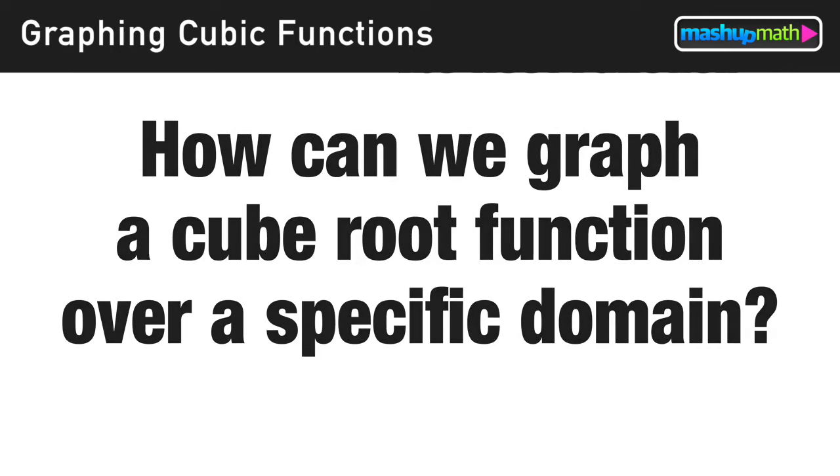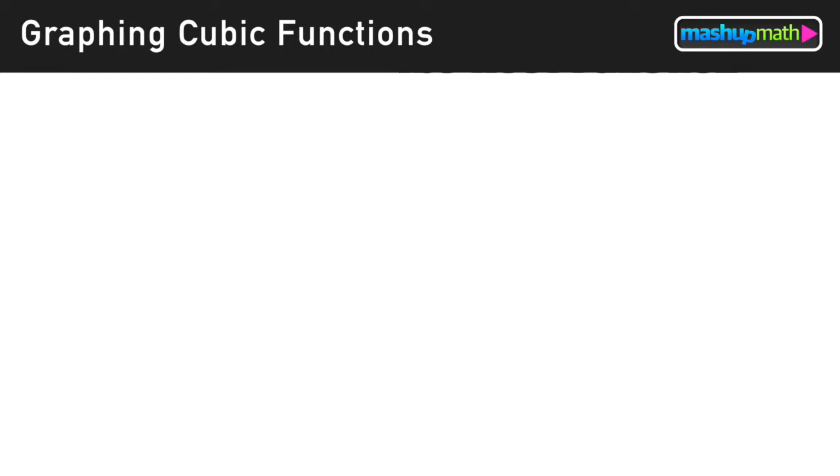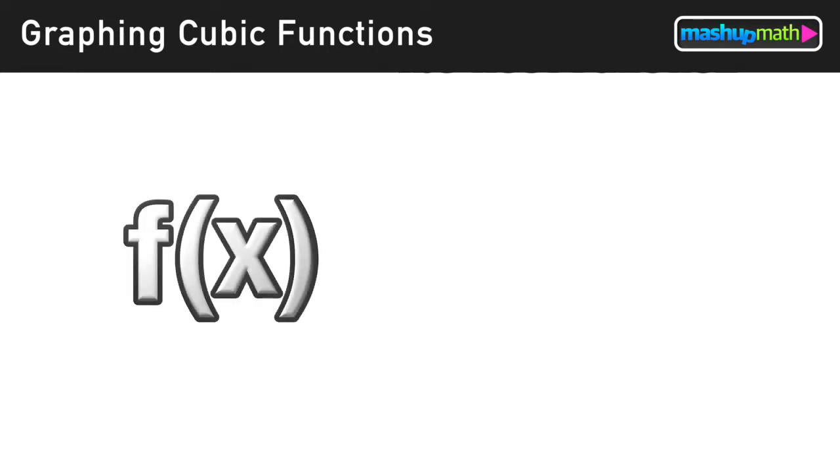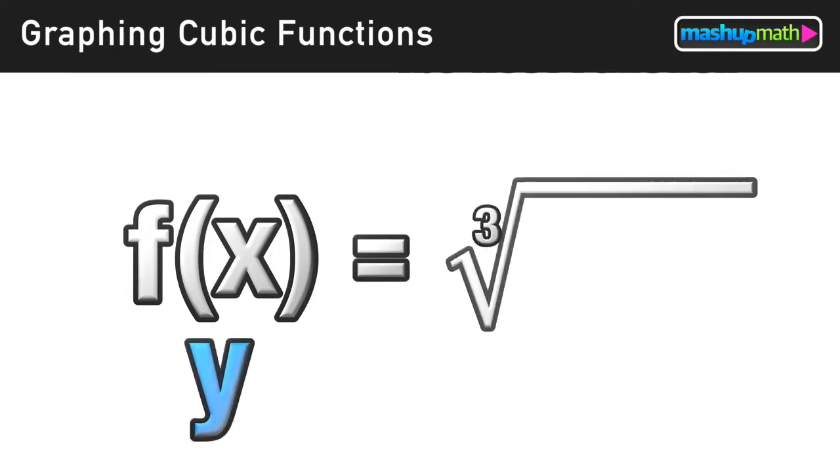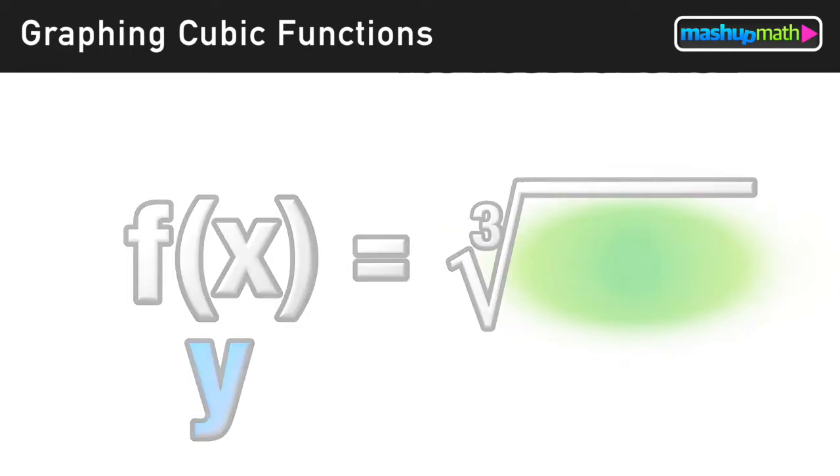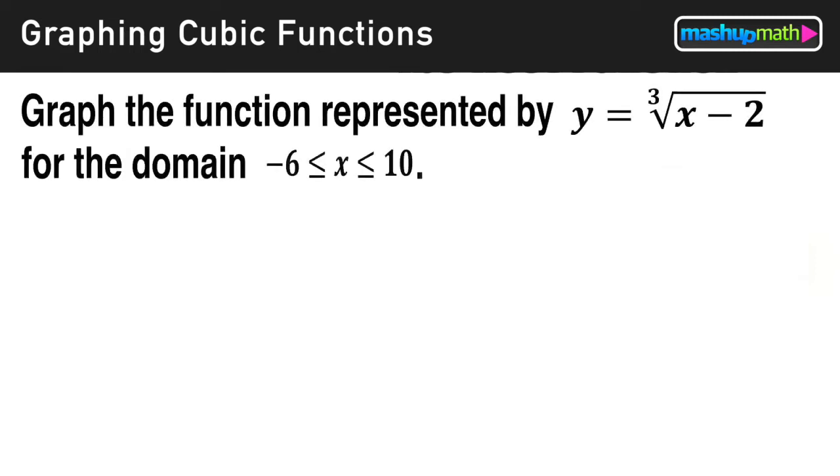A cube root function is going to look like this: either f of x equals or y equals the cube root of something. So let's move on and do an example together.